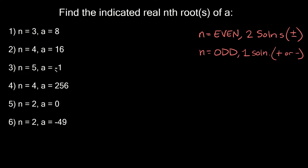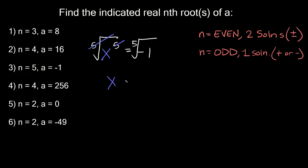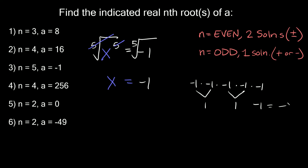Next, n is equal to 5 and a is equal to negative 1. So we have x raised to the 5th equal to negative 1. We have an odd exponent, so we're only going to have one answer. We take the fifth root of both sides — those cancel out — giving x equal to the fifth root of negative 1, which is negative 1. Negative 1 times negative 1 is 1, times negative 1 is -1, times negative 1 is 1, times negative 1 is negative 1. So our one root is negative 1.